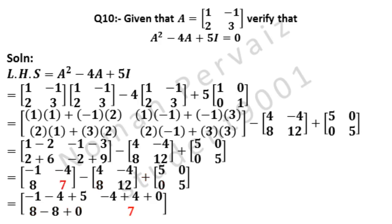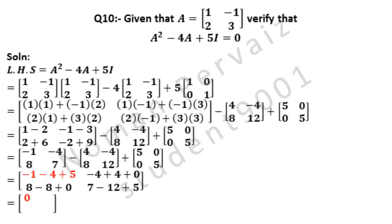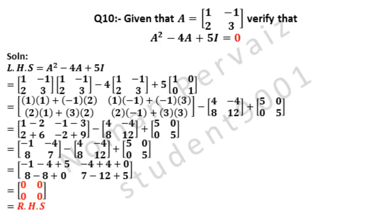Here we write 7 from first matrix, then minus is written, 12 from second matrix. Plus is written, then 5 from third matrix. Minus 1 minus 4 plus 5 is 0. Minus 4 plus 4 plus 0 is 0. 8 minus 8 plus 0 is 0. And 7 minus 12 plus 5 is also 0. This matrix containing all elements equal to 0 is called null matrix, which is also 0.